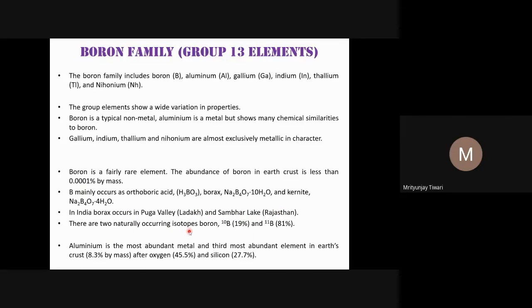There are two naturally occurring isotopes of boron: boron-11 (81% abundance) and boron-10 (19% abundance). Because boron-11 has much higher abundance, the average atomic mass of boron is closer to 11. In calculating molecular formulas and molecular masses of boron compounds, we take the mass number as 11.